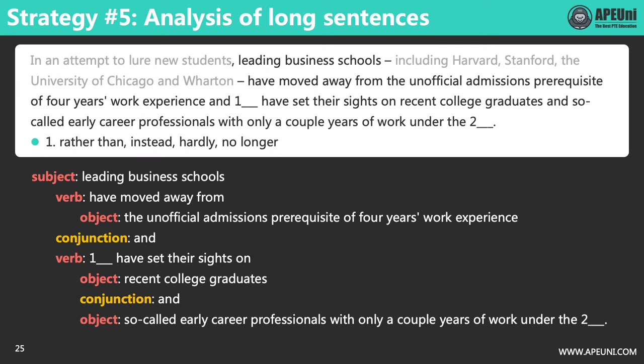Now let's try applying this to the long sentence. It starts with 'in an attempt to lure new students' — a prepositional phrase, so it's just a descriptive part we don't need to care about now. 'Leading business schools' is a noun phrase, which is probably the subject. 'Including Harvard, Stanford, the University of Chicago, and Wharton' is enclosed in dashes — a parenthesis used to describe 'leading business schools.' It's again a descriptive part which can be ignored now.